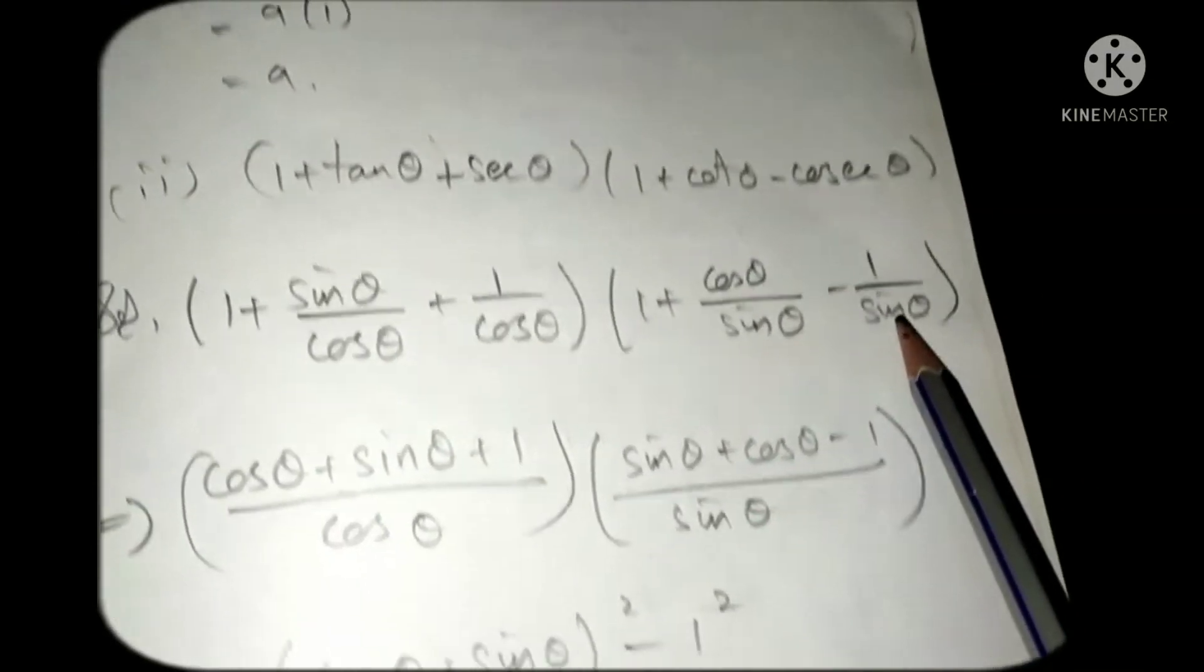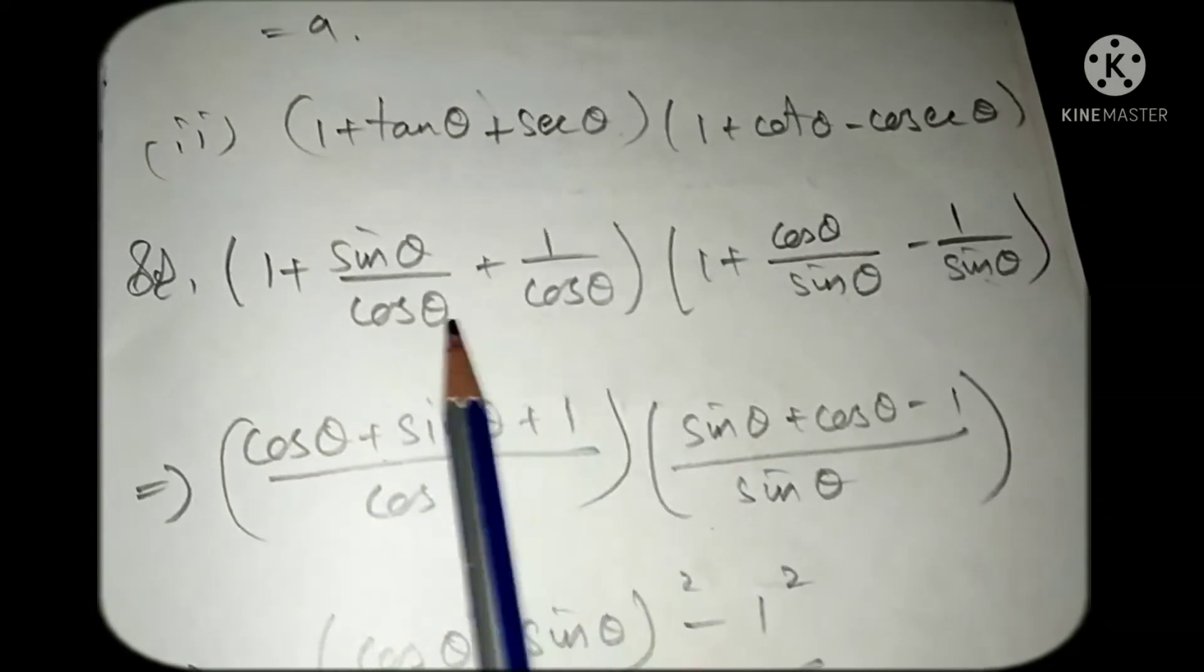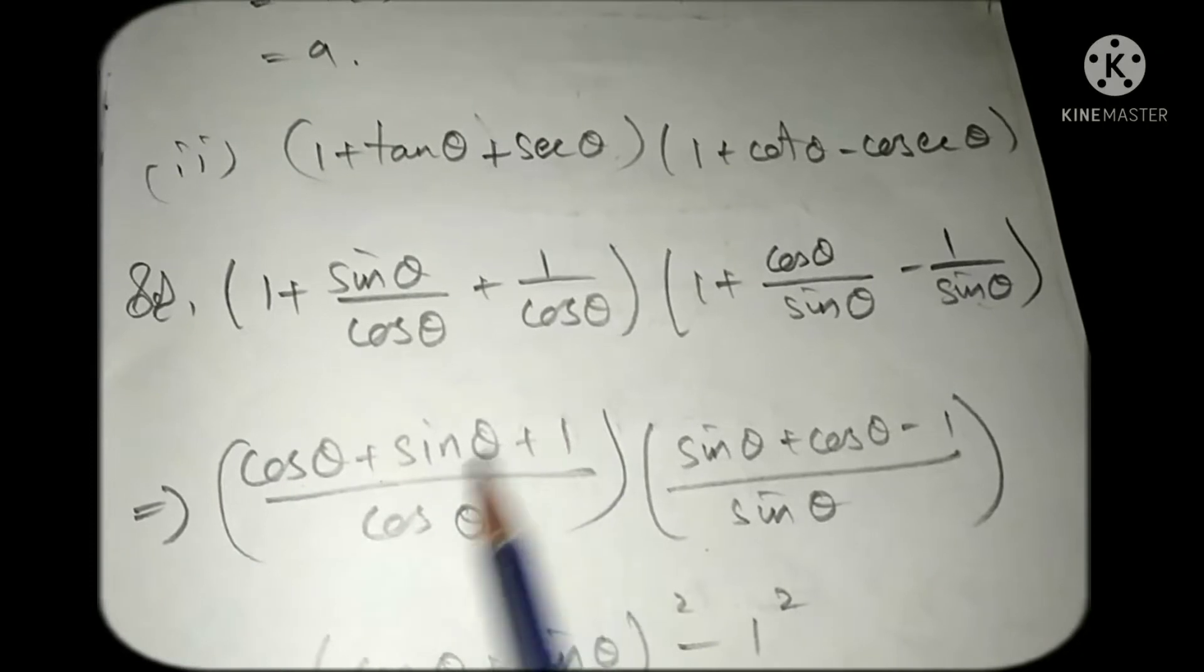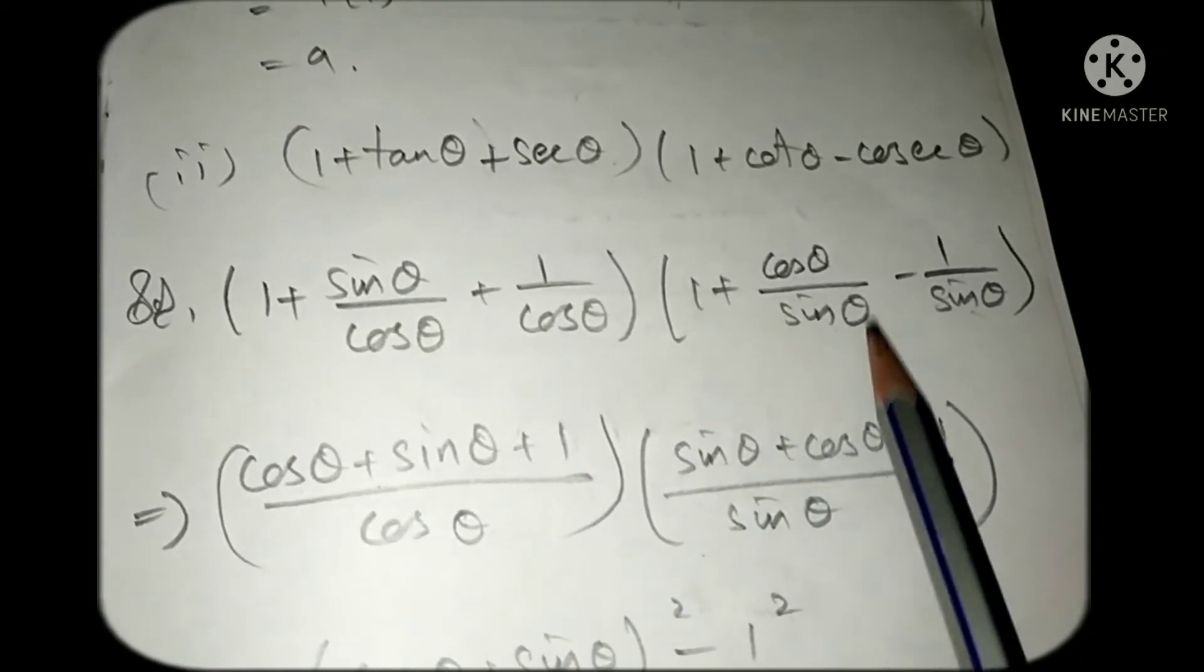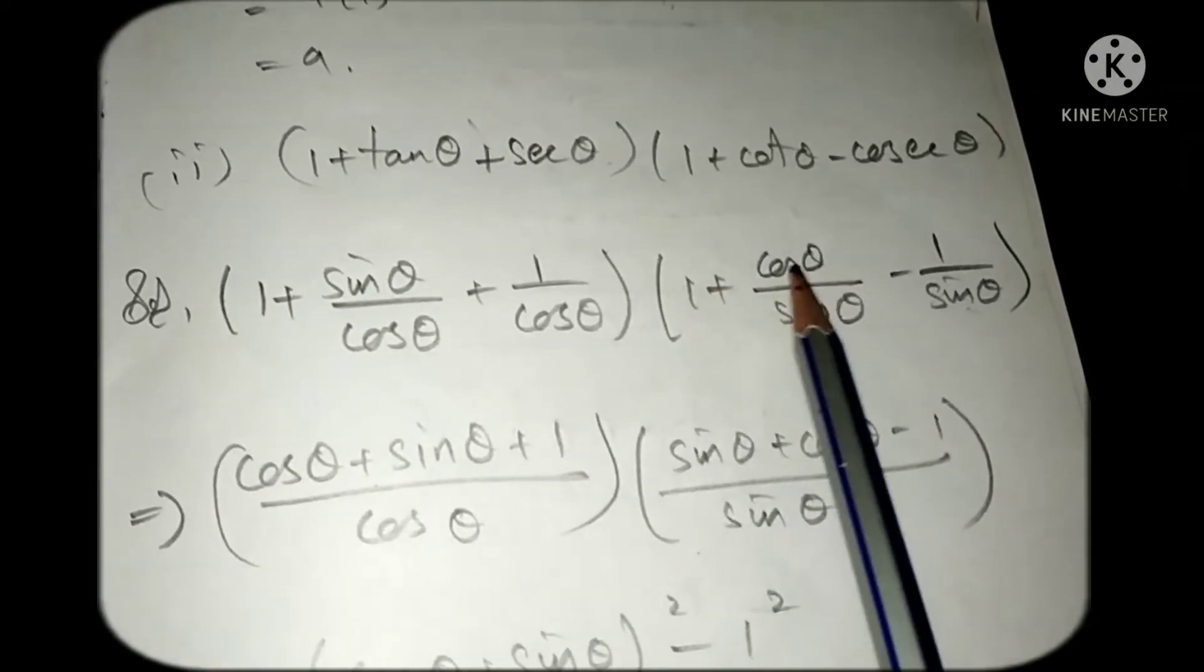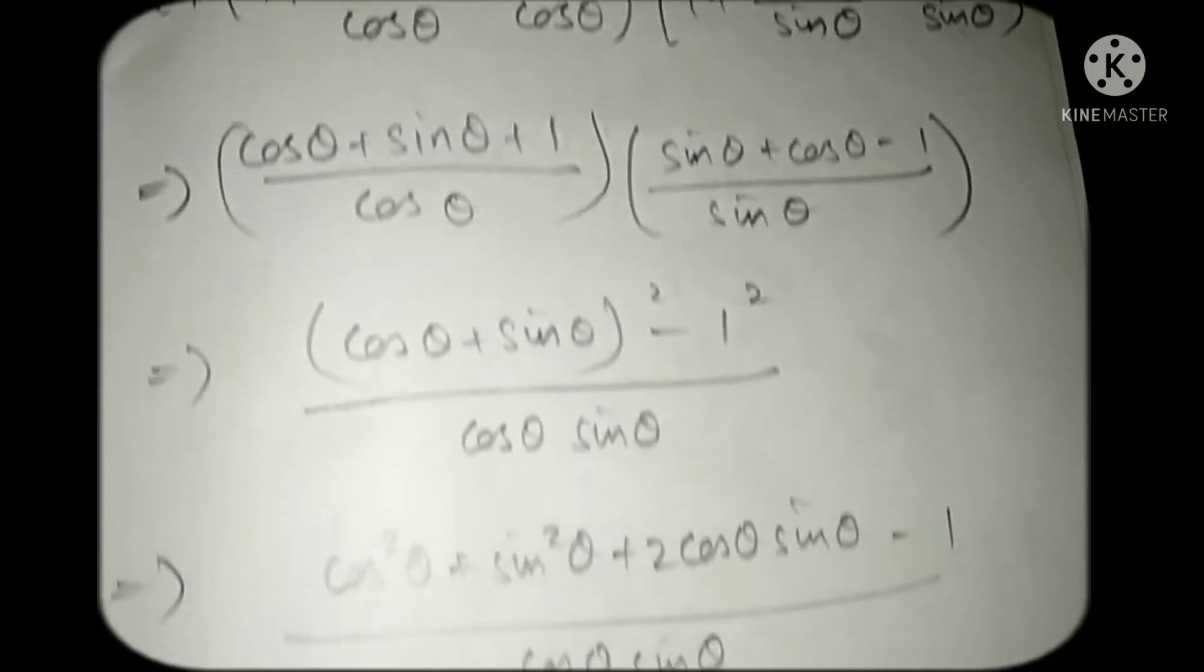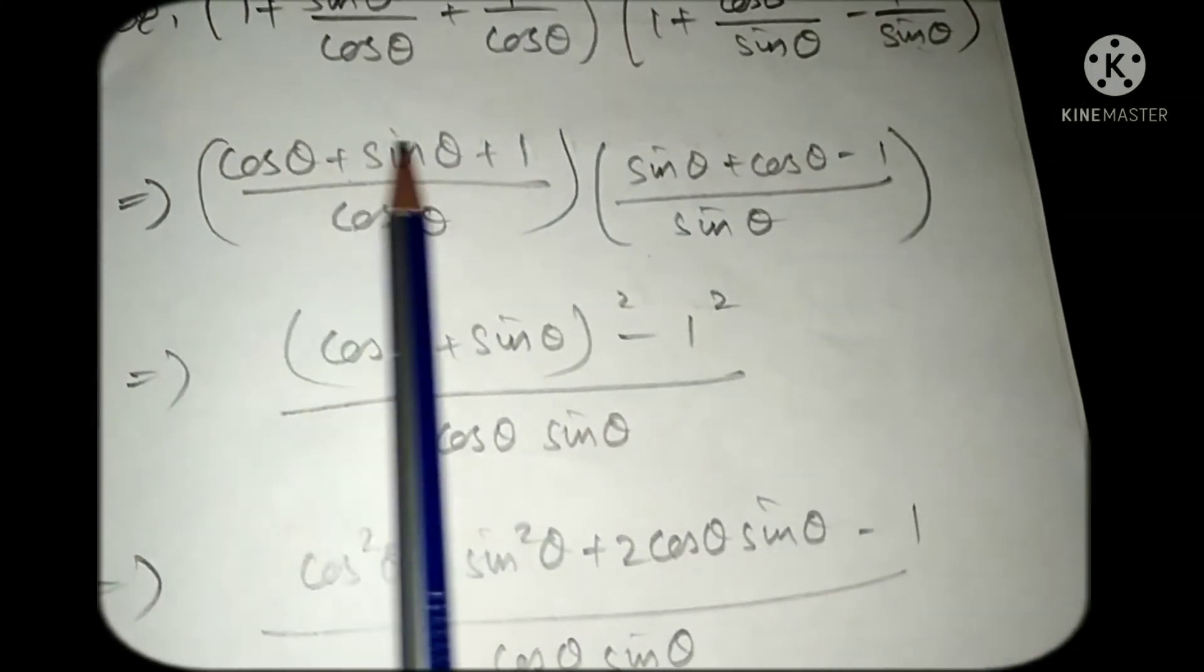Now we can take cos common and here we have to take LCM. You will multiply with cos θ, here also you have to multiply with sin θ - cross multiplication. After taking LCM you will get this answer. Now here you can see multiplication sign is there, you can multiply the denominators.